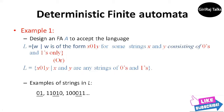Some examples of strings in the language include: 01, 110100, and 10001. Examples of strings not in the language include: epsilon, 0, and 1110.